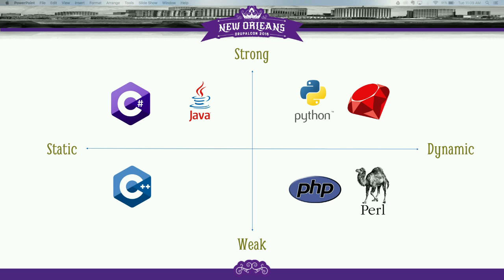These four type systems generate an interesting two-dimensional space. A programming language could have either a strong or weak type system, and either a static or dynamic type system - strong and weak are opposites, static and dynamic are opposites. Java has a strong and static type system, meaning it's likely to throw compile-time errors for type violations. Python is an example of strong typing and dynamic typing. Our own PHP is an example of dynamic and weak typing. One important point: nothing is absolute - Java tends toward strong and static typing, but still has some components following the weak type system.